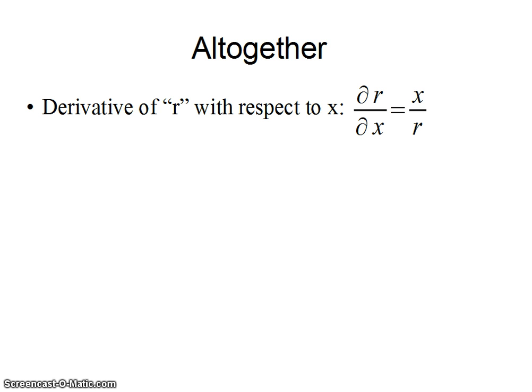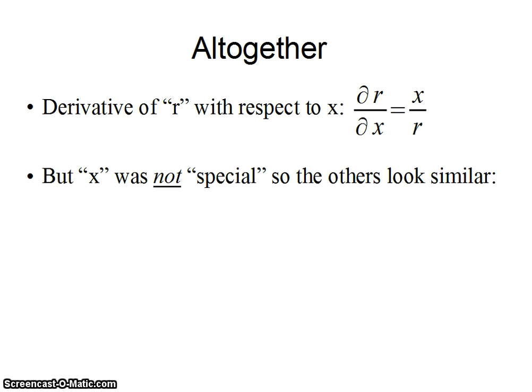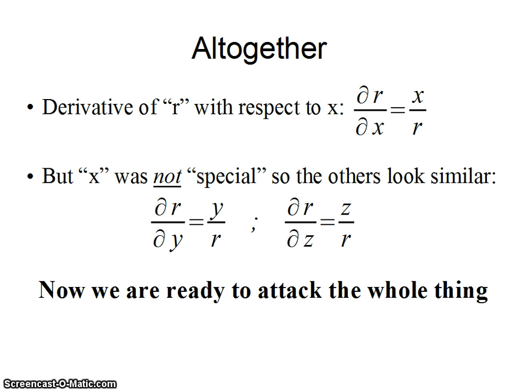If I start putting these things together just using that part of the chain rule, the derivative of r with respect to x was x over r. Now, x was no different from y and z. Physically, it's not different. It's just a rotation. And mathematically, it appears the same way in the formula. So the results for partial derivative of r with respect to y and z ought to look similar. And they do. You can crank through it yourself if you want. But really, it's just a matter of thinking about algebra and saying, I could have called that thing x, y. That is, the thing that was x could have been called y. And I get the result I have written here for y. Same thing with z. These are useful. We're ready to attack the whole thing.